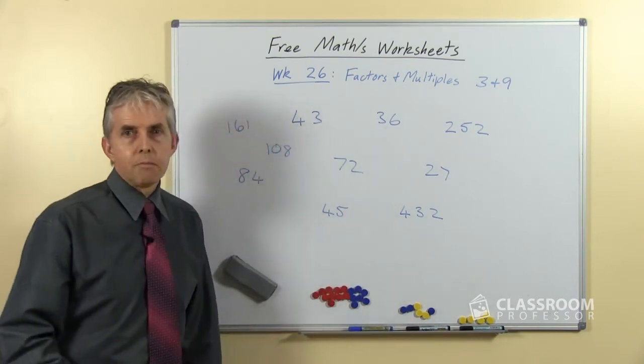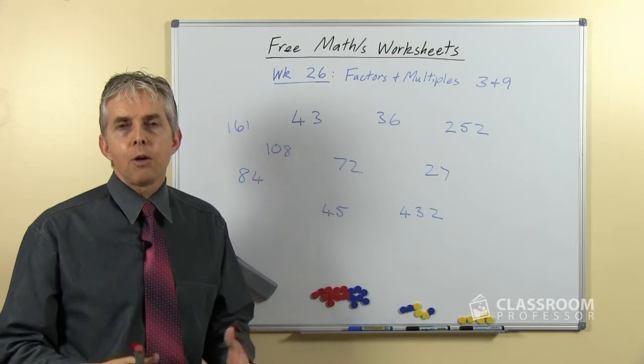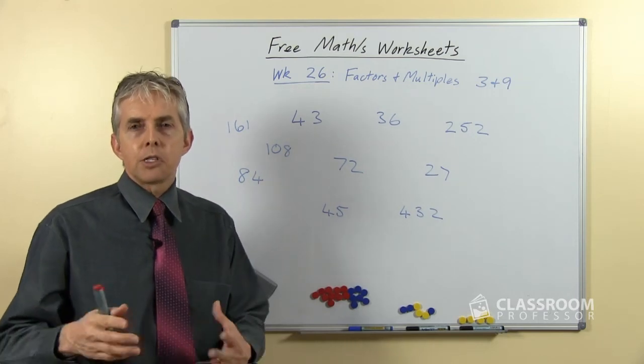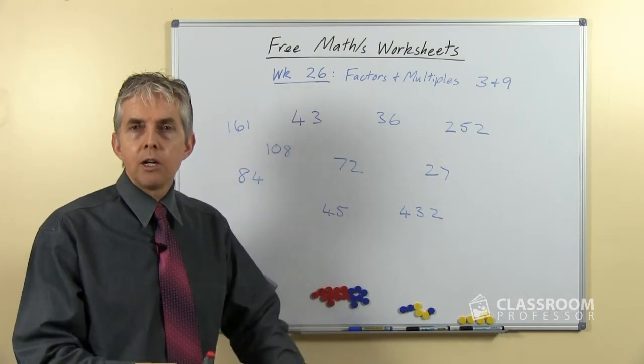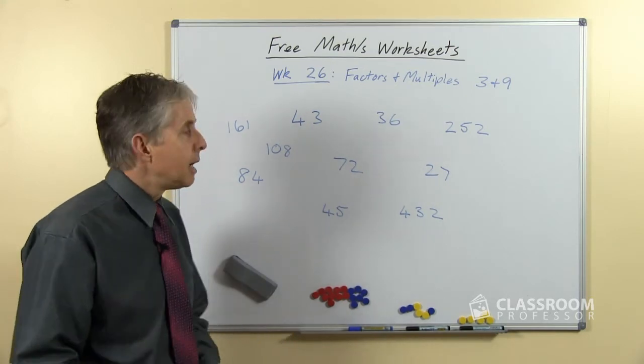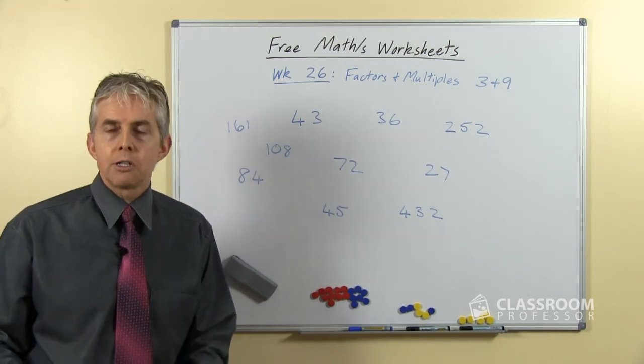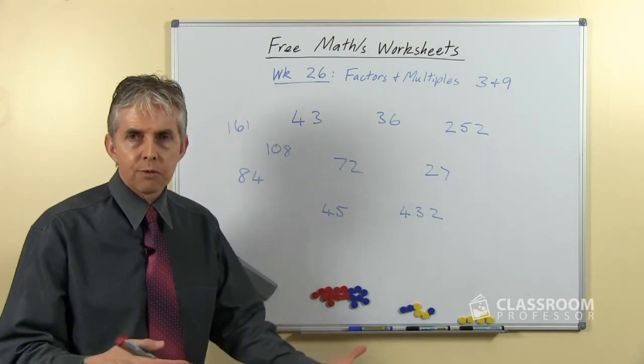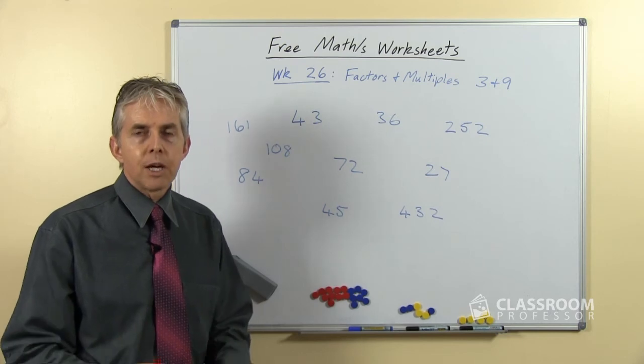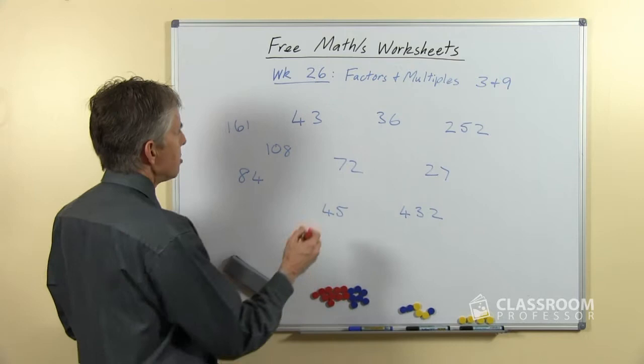Okay, now the method for multiples of 9 is almost exactly the same. If you add the digits together, if the sum of the digits is 9 or a multiple of 9, then the number is divisible by 9. Now the students probably already know that, having learned the 9 times table well before they get to here.